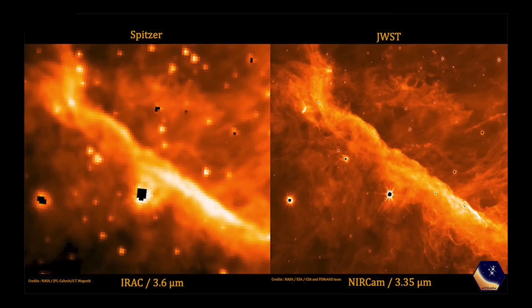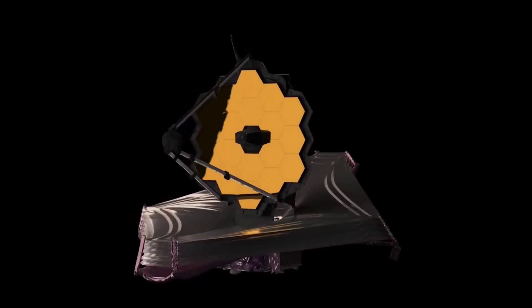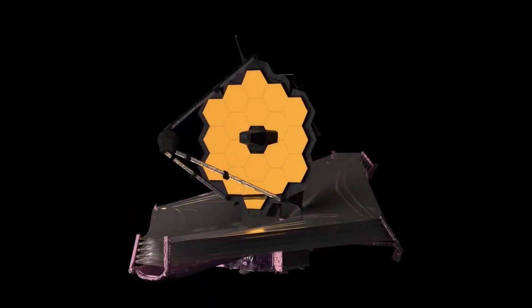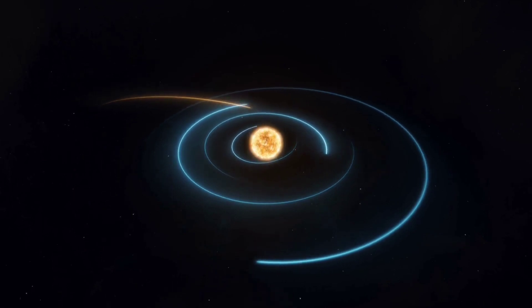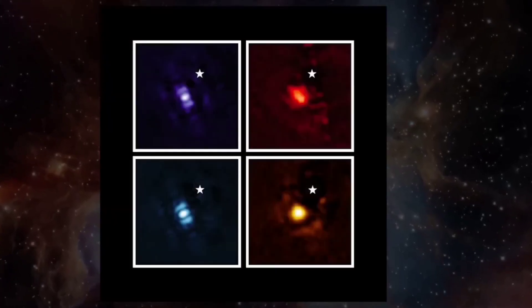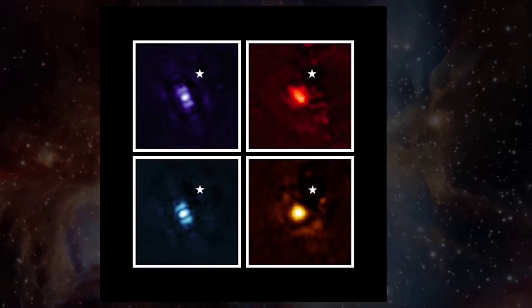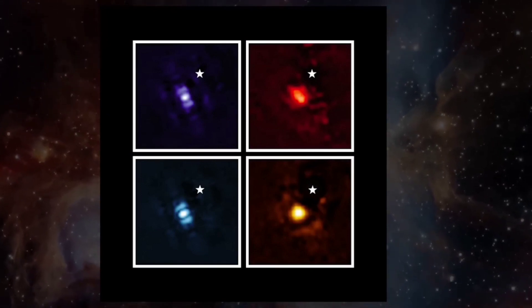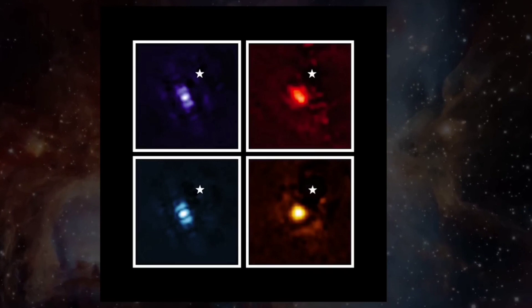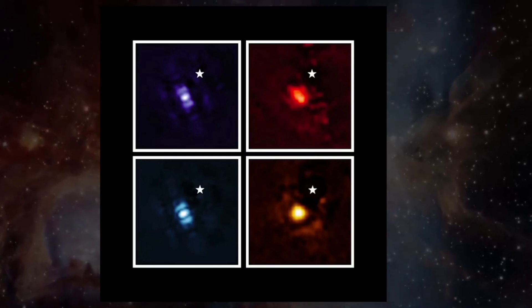Just months into unfolding the universe, Webb is already doing wonders. Recently, the telescope captured its first direct images of an exoplanet. They show the exoplanet HIP-6426b in different wavelengths of infrared light. The small white star in each image marks the location of the easily separate planet from the star. The planet is approximately 12 times the mass of Jupiter and is only 15 to 20 million years old.